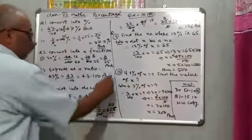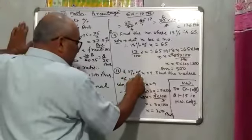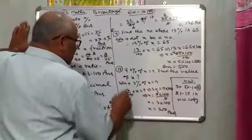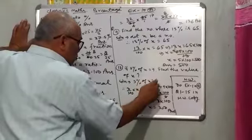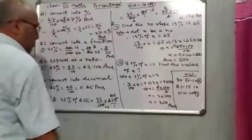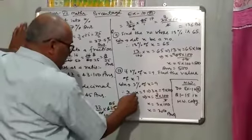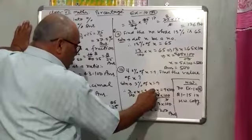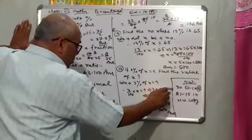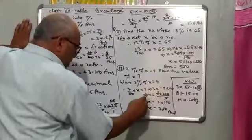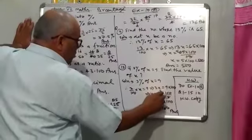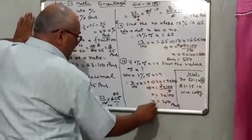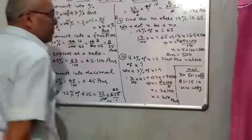Question number 13: If 3% of x is equal to 9, find the value of x. Therefore, 3 upon 100 into x equals 9, so 3x equals 9 into 100. Where x equals 9 into 100 upon 3. Since 3 goes into 9 three times, x equals 3 into 100, which is equal to 300.